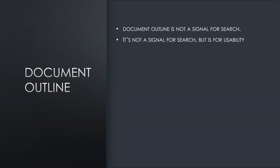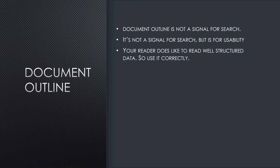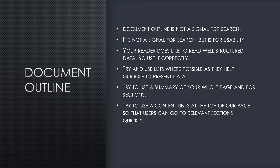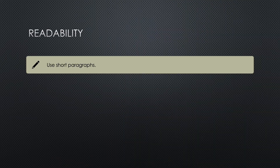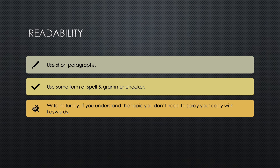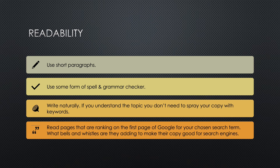Document outline: it's not a signal for search, but it's very important for usability. Your reader likes to read well-structured content, so use it correctly. Try to use lists where possible — they help Google present data and help the user as well. Try to use a summary of your whole page or just for sections — that helps the reader and helps Google. Try to use content links at the top of your page so users can go to relevant sections quickly. Use short paragraphs — no one likes long paragraphs on the web. Use some form of spell and grammar checker. Write naturally. Read pages ranking on the first page of Google for your chosen search term — if they're using lists and summaries and it's got them to number one, you use lists and summaries.